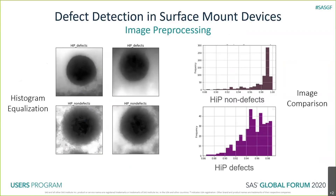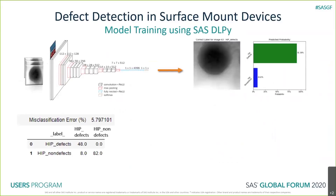Once we captured the differences, we pushed the data through a model training pipeline. Using SAS DLPy, we trained the model on the histogram-equalized images. After pre-processing, we had sets of defects and non-defects that we pushed into a VGG16 architecture using SAS DLPy, and we were able to build a model with a misclassification error of 5.7%. This is very good given that today most manufacturers use a manual process where operators visually inspect defects and measure eccentricity, thickness, and diameters of joints. Using computer vision directly on the images will help save time and enhance productivity.